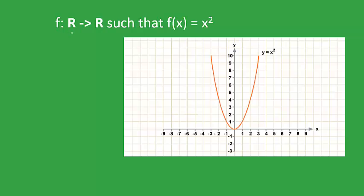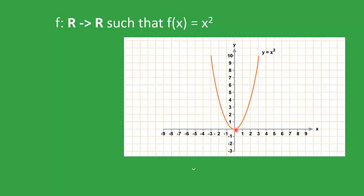Let us look at the complete analysis of a polynomial function — say f(x) equals x². As you can see from the figure, this is the graph of y equals x². The graph is a pictorial representation of the function in which the curve consists of all the points lying on the function — that is, the set of values of x and the corresponding set of values of y. The points which lie on this curve are the elements of this function f(x). As you can see, (0, 0) lies on it.